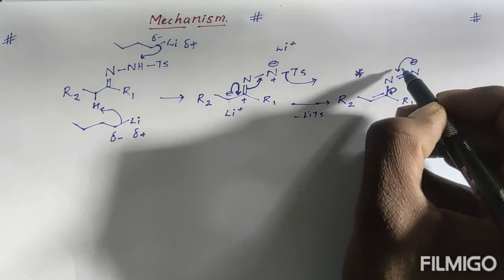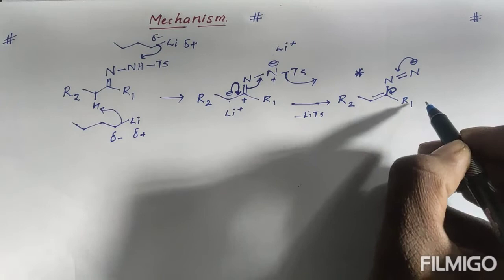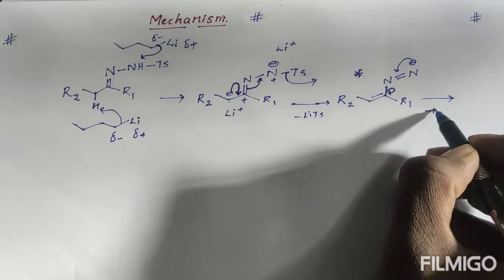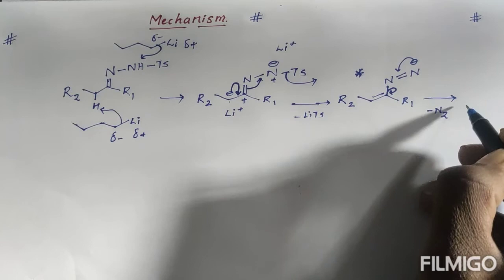This step happens because the outgoing byproduct — nitrogen gas (N₂) — is very stable. So nitrogen leaves as N₂ gas. What we get is a carbon-carbon double bond with a negative charge (carbanion/vinyllithium) on the terminal carbon.